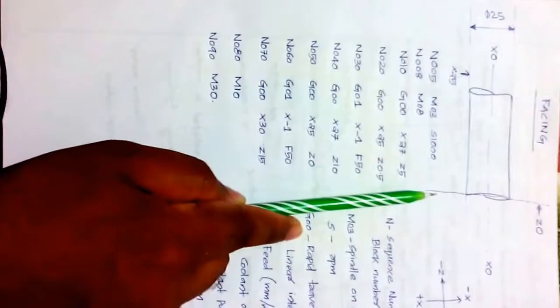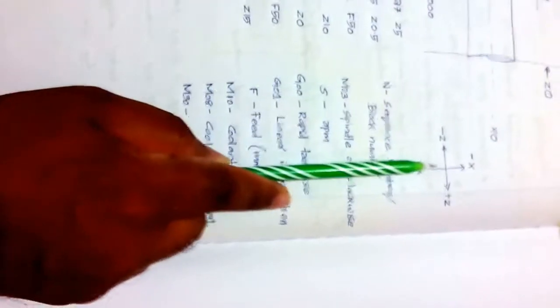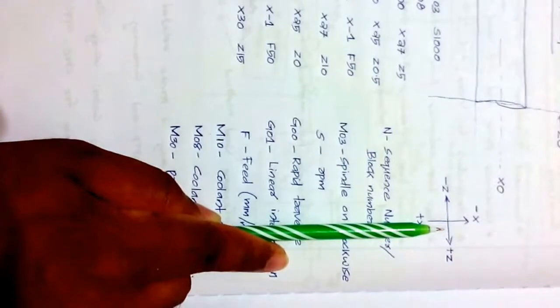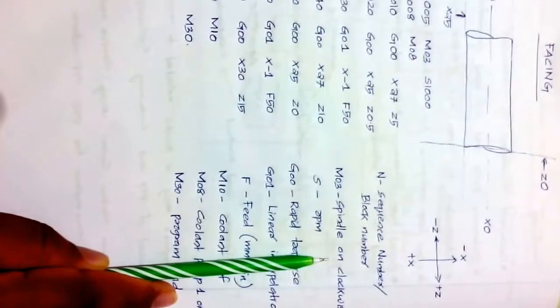X25 refers to the diameter of the workpiece, and Z0 is our reference. Moving left is Z negative; moving right is Z positive. The centerline of the workpiece is X0. When the tool moves forward it is X negative, and in the backward direction it is X positive.